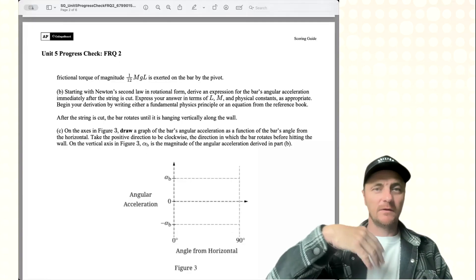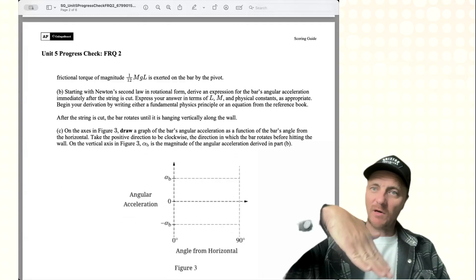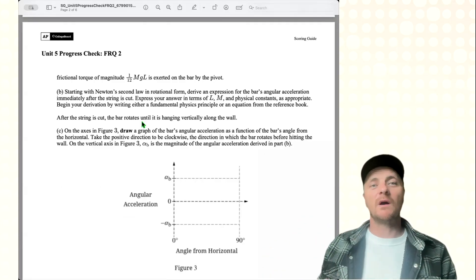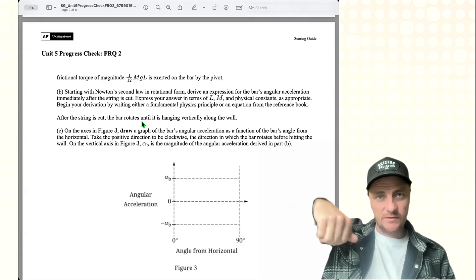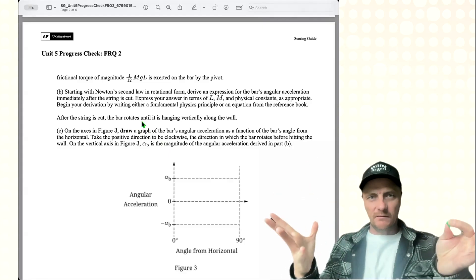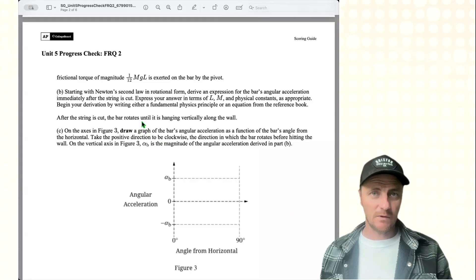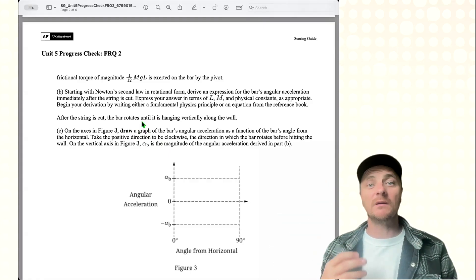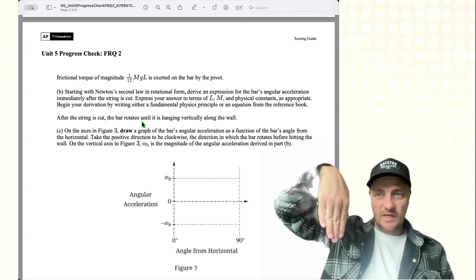All right, moving on to part C. Okay, here's part C, and remember the situation. We cut the string and the bar swings downward. And what it's asking for, all of that verbiage is saying, what's going on with angular acceleration during that cut and then rotation? Well, when you drop something, immediately it has an acceleration of negative 9.8 meters per second squared. So the second you cut that string, it's immediately undergoing an angular acceleration, and it's pretty big. But as it rotates down,